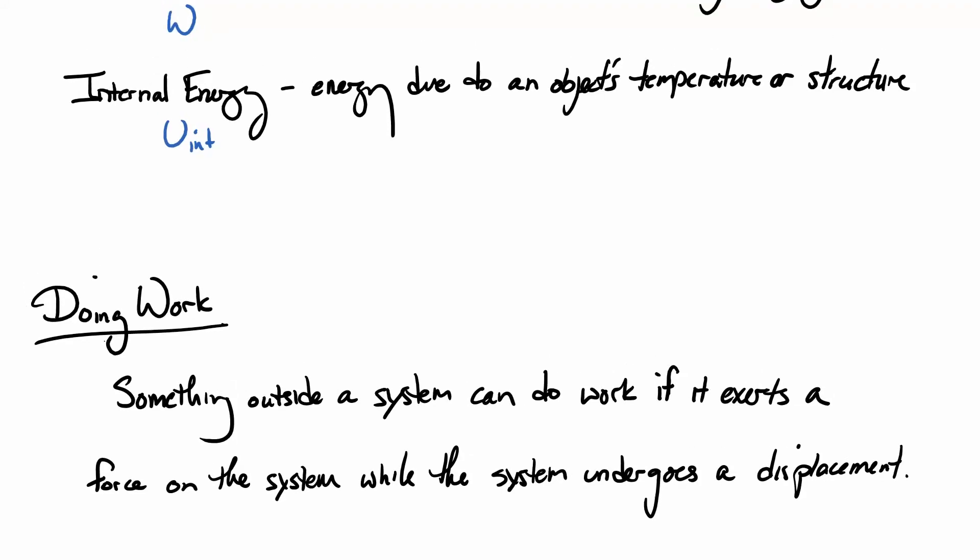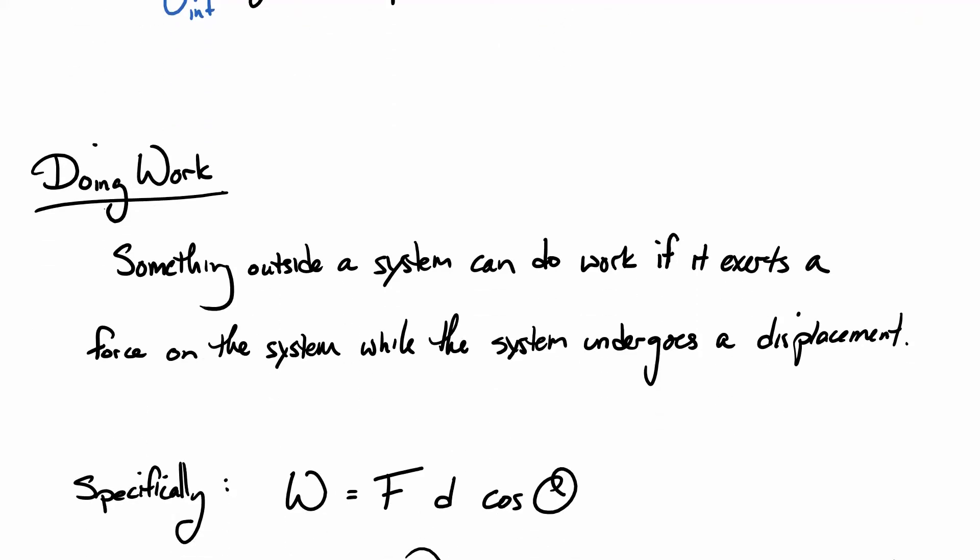So what this means, if I push an object, so if I push something to the right and it moves to the right, I do work on it. If something is moving to the left and I push it to the right, I also do work on it, but in another way. In that case I'd be slowing it down. In the first case it's speeding it up. So we need to be able to differentiate these.